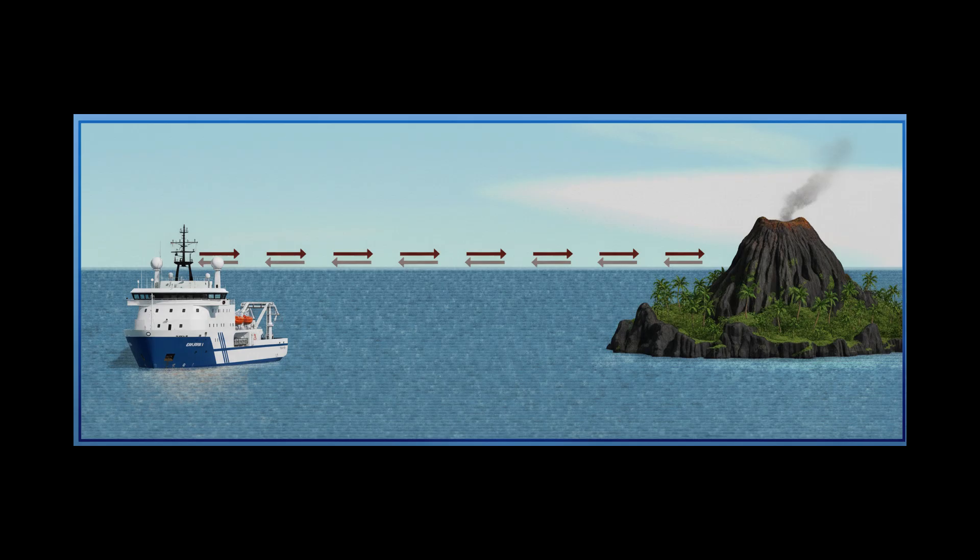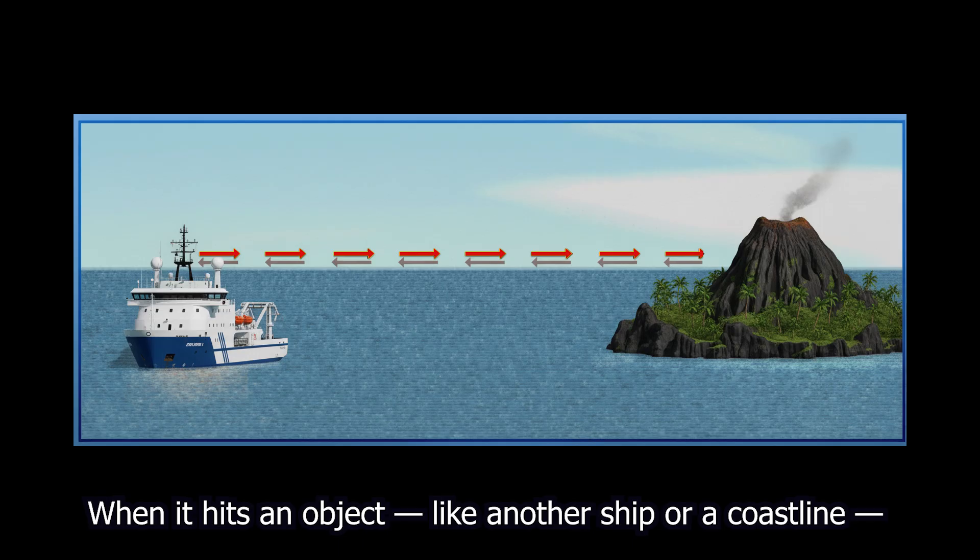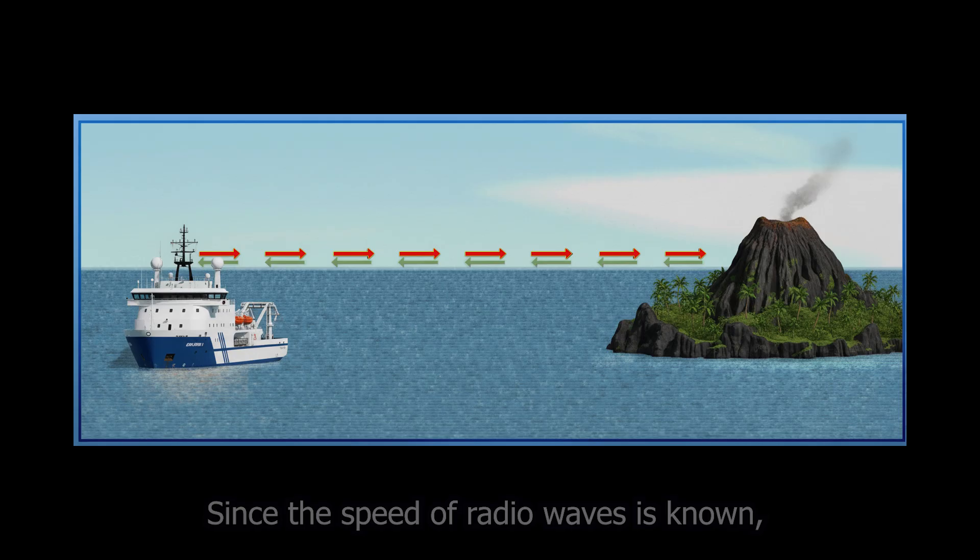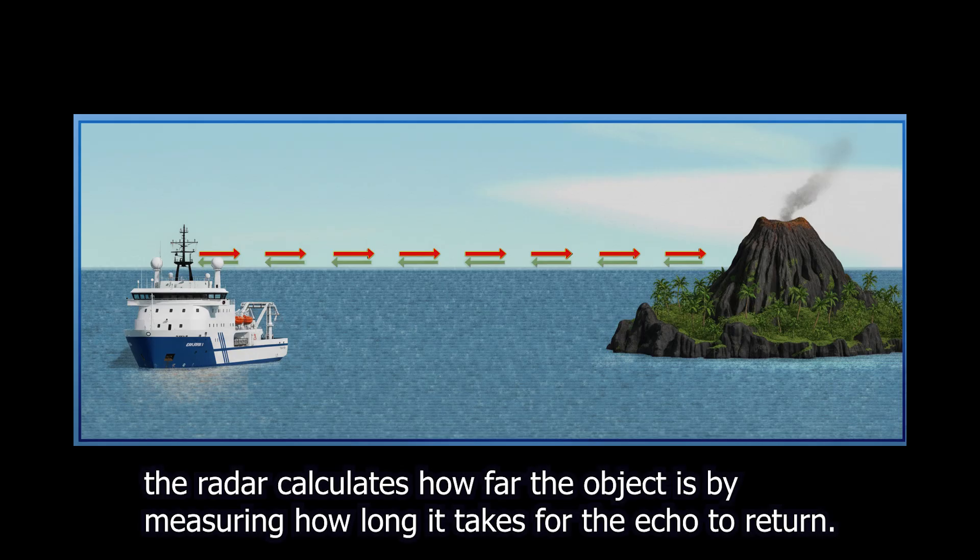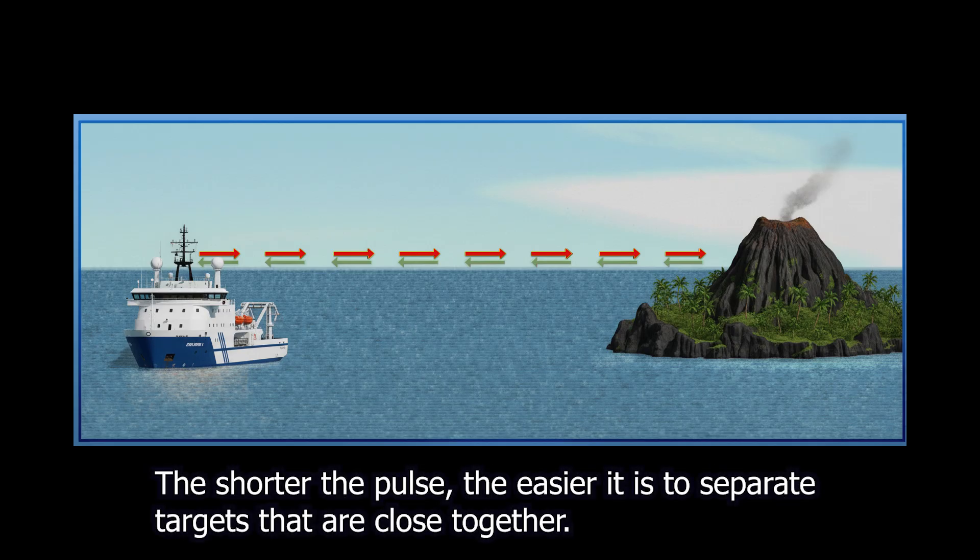Here's how radar works. The radar sends out a short burst of electromagnetic energy. When it hits an object, like another ship or a coastline, part of that energy reflects back. Since the speed of radio waves is known, the radar calculates how far the object is by measuring how long it takes for the echo to return. The shorter the pulse, the easier it is to separate targets that are close together.